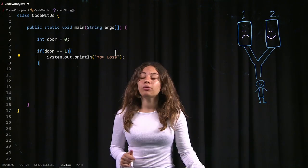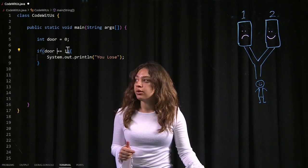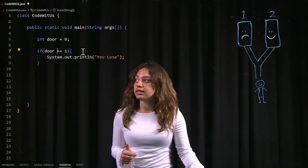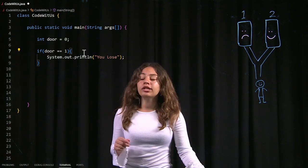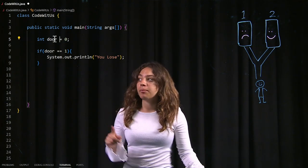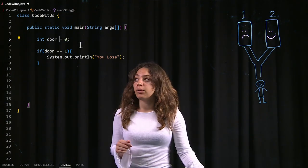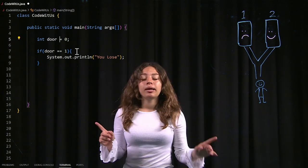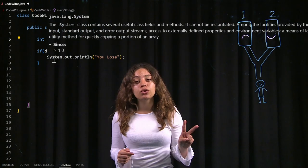So another point to note here is I'm checking if our door is equal to one using two equal signs. And this is very important to note because we only use one equal sign when we are setting variables. You see up at the top over there, I'm setting door equal to zero with one equal sign. But when I'm checking if the door is equal to door number one, I'm using two equal signs.